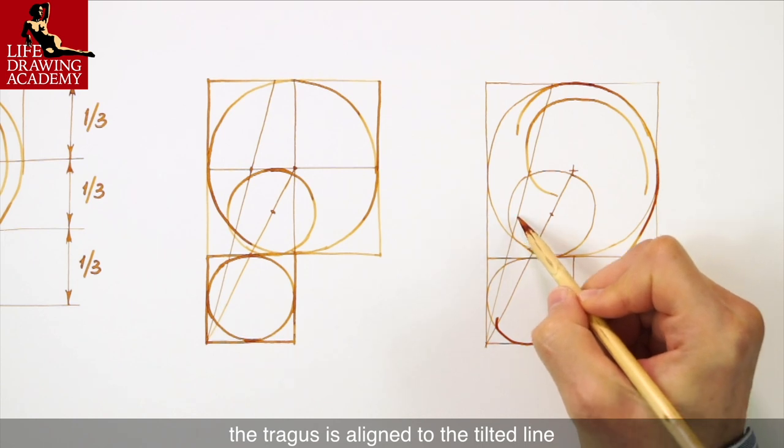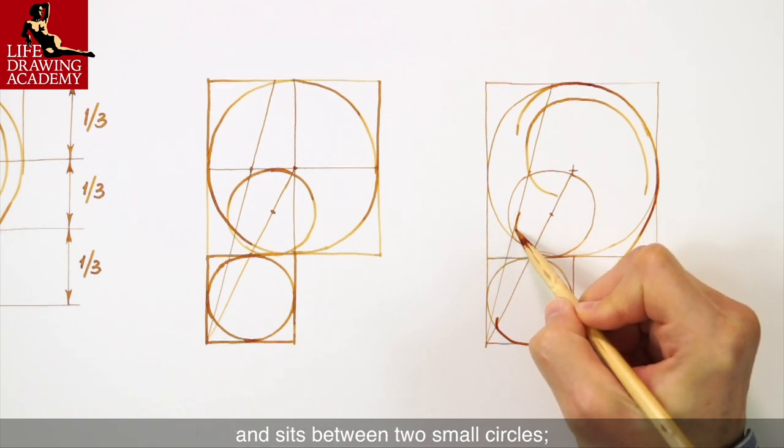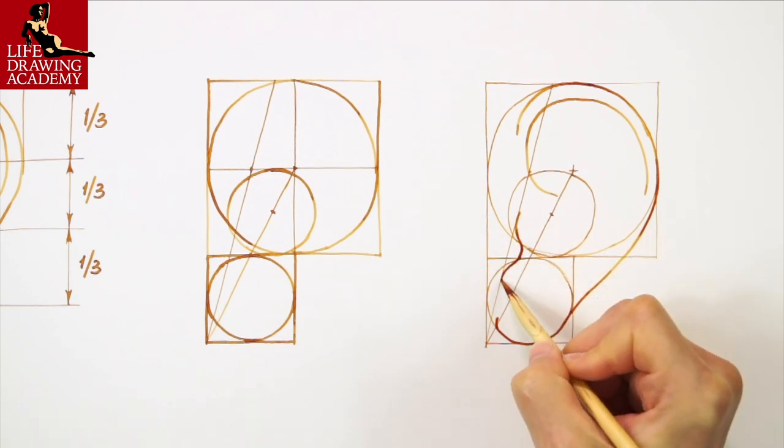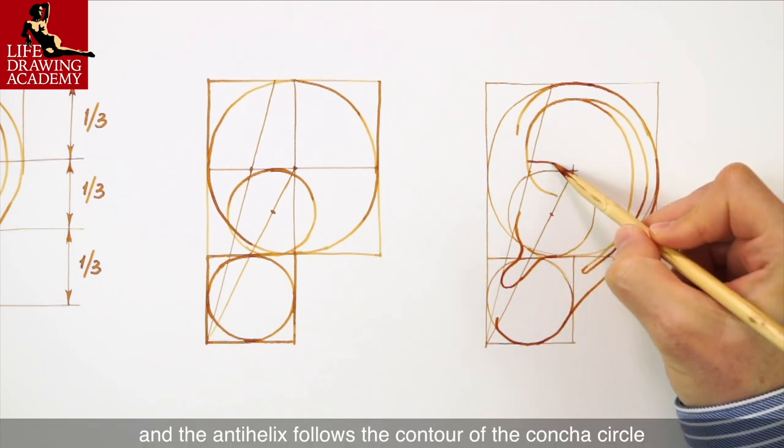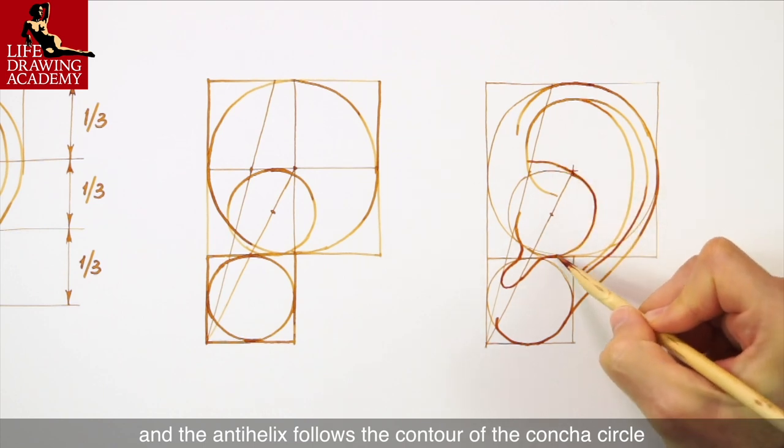The tragus is aligned to the tilted line and sits between two small circles. The anti-tragus touches the middle circle. And the anti-helix follows the contour of the concha circle.